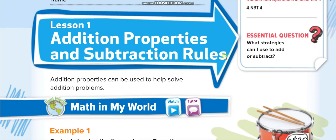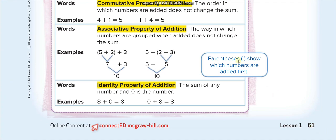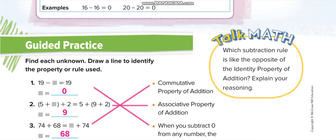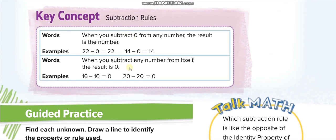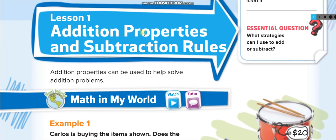Hello everyone, welcome back to my channel 'Learn Math with Mr. Saad' for another video lesson. Today's lesson is Grade 4, Chapter 2, Lesson 1: Addition Properties and Subtraction Rules, page 61. In this lesson we have three addition properties and two subtraction rules — five things to memorize. We use these addition properties and subtraction rules to make the process quicker, to add and subtract quickly.